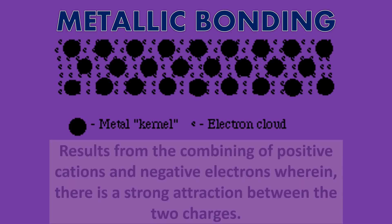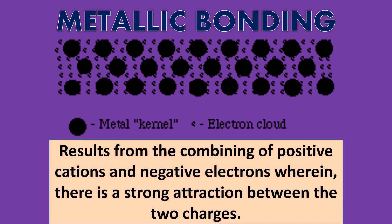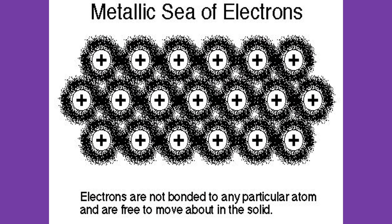Metallic bonding results from the combining of positive cations and negative electrons, wherein there is a strong attraction between the two charges. In metallic bonds, the valence electrons from the S and P orbitals of the interacting metal atoms delocalize. That is to say, instead of orbiting their respective metal atoms, they form a sea of electrons that surrounds the positively charged atomic nuclei of the interacting metal ions.